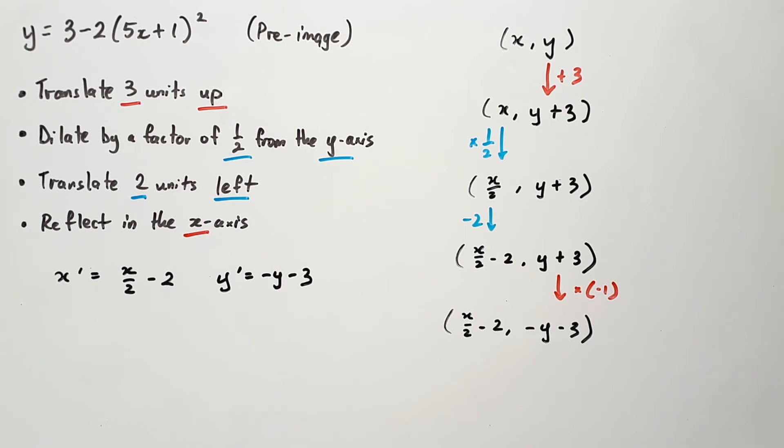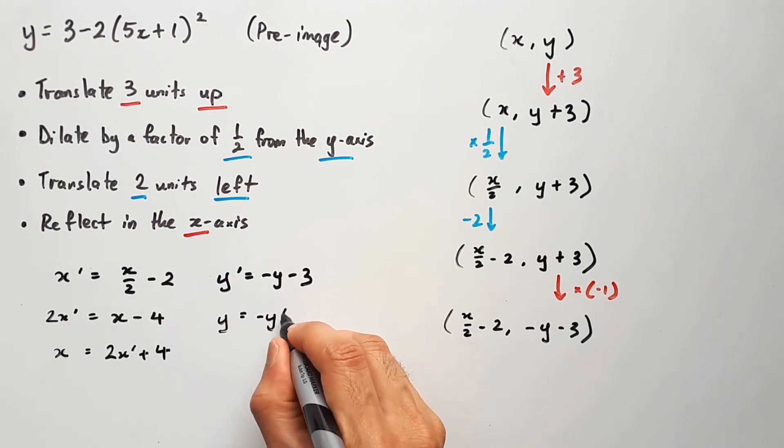We don't want x and y in our final equation, we want x' and y', so make x and y the subjects, such that x will equal 2x' + 4, and y equals -y' - 3.